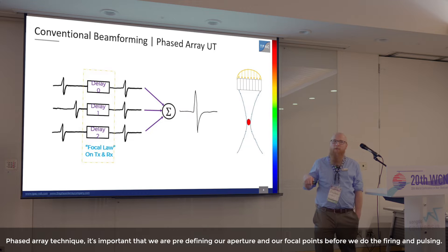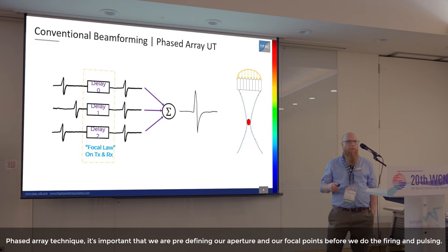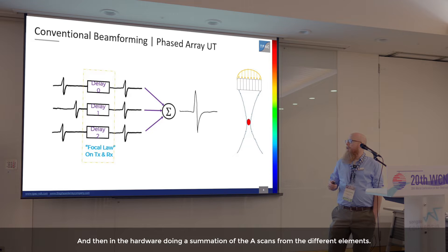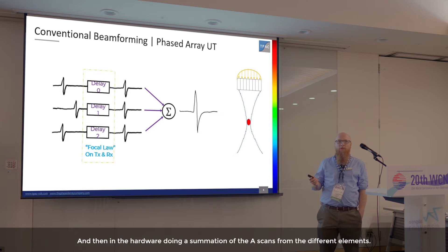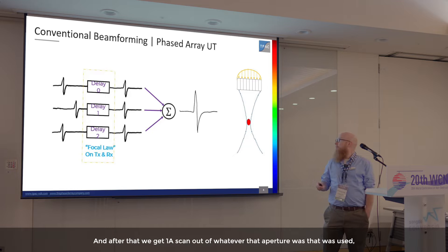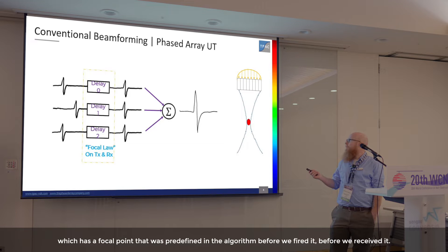With phased array technique, it is important that we pre-define our aperture and our focal points before we do the firing and pulsing. Then, in the hardware, we do a summation of the A-scans from the different elements, and after that we get one A-scan out of whatever aperture was used, which has a focal point that was predefined in the algorithm before we fired and received.